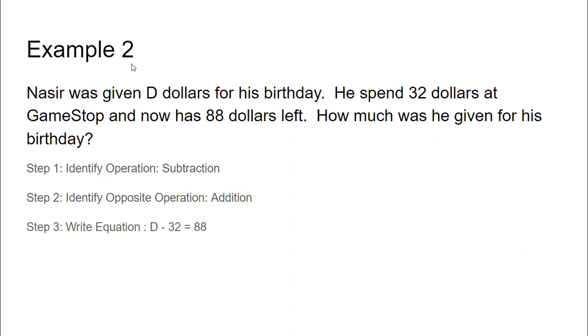I'm going to write the equation. He started with 50 dollars, he's subtracting 32 dollars, and then it equals 88 dollars. Now I'm going to solve the equation. I'm going to add 32 on both sides, and then I get 120 as my solution.